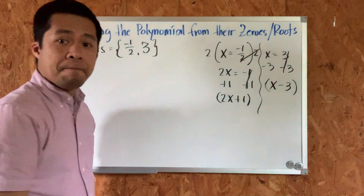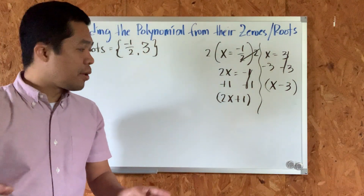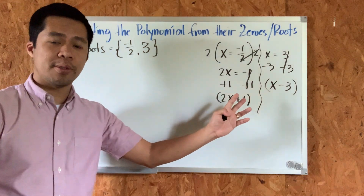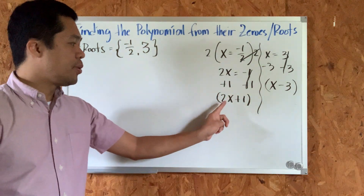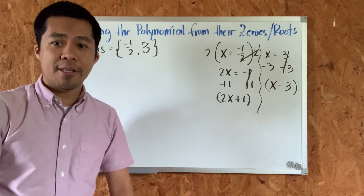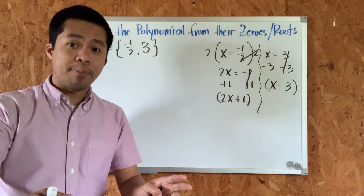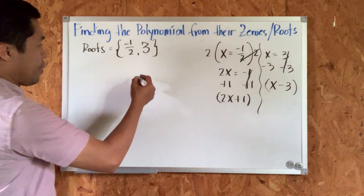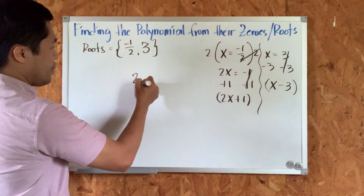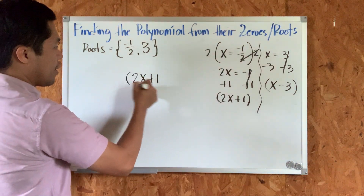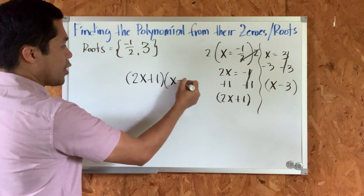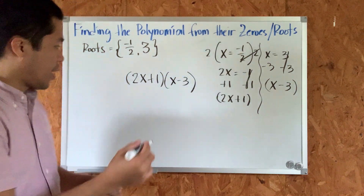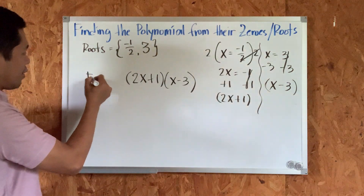Now we were able to convert the two roots into two binomials: two x plus one and x minus three. The next step is to multiply those two. The method we will use is the FOIL method — please take note of that.